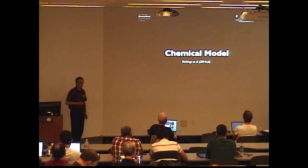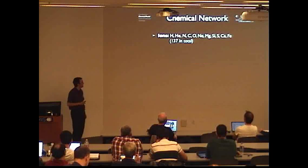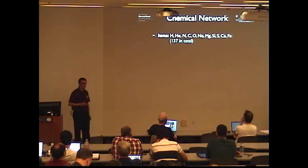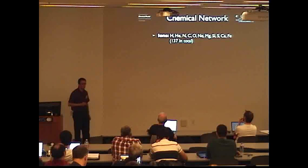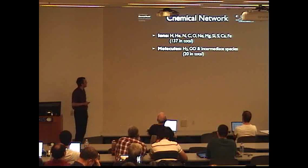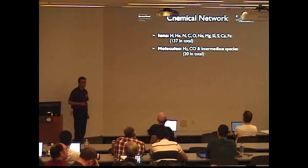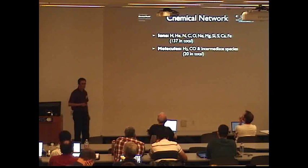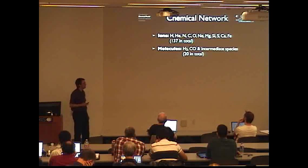The first stage was to develop the chemical model itself. We need a chemical network containing all the chemical species we want to follow. Because we also want to calculate cooling rates, we need to include all species that contribute significantly. This includes all ionization states of eleven elements, and a number of molecules — most importantly H2 and CO — plus intermediate species needed for their formation. This gives us 157 species in total. The network contains all reactions between these species: collisional ionization, recombination, photo-ionization from a UV radiation field, formation of H2 on dust grains, and so on, giving a series of rate equations we integrate in time to follow abundances.